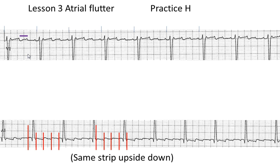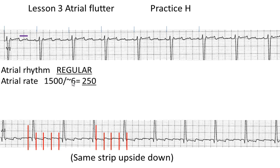Now let's go back to the strip up here. Flutter waves are going to be about six little boxes apart. I also marked out one-second boxes and counted 24 flutter waves, giving a heart rate for the atria of about 240 — so roughly six little boxes apart gives us approximately 250 beats per minute.